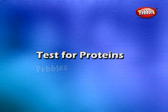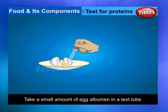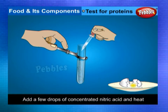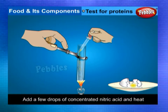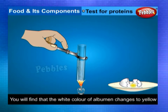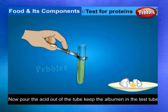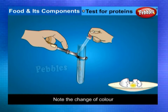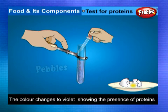Test for Proteins: Take a small amount of egg albumin (white portion) in a test tube and add a few drops of concentrated nitric acid and heat. You will find that the white color of albumin changes to yellow. Now pour the acid out of the test tube. Keep the albumin in the test tube and add a few drops of ammonium hydroxide, and note the change of color. The color changes to violet, which shows the presence of proteins.